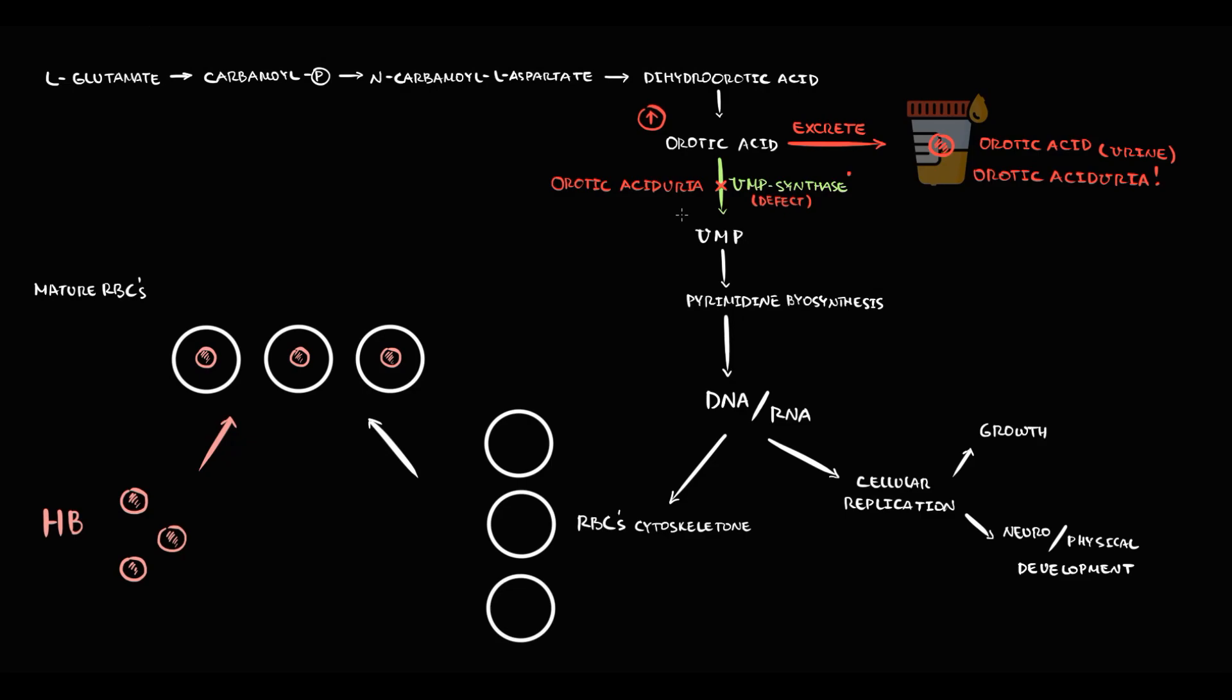But there is a second problem. Without UMP synthase, we cannot make uridine monophosphate. And without uridine monophosphate, pyrimidine biosynthesis decreases, and thereby DNA and RNA production decreases. With decreasing DNA and RNA production, cellular replication decreases, which affects growth of organism, so the child will have failure to thrive, and also it affects neurological and physical development, which will cause physical and mental retardation.